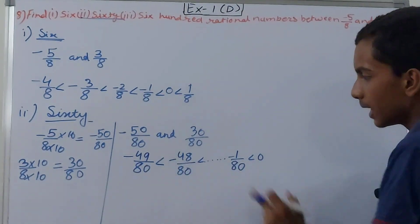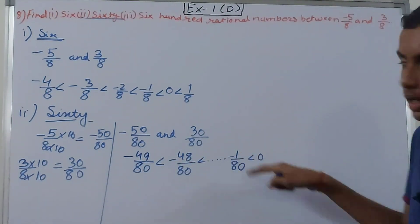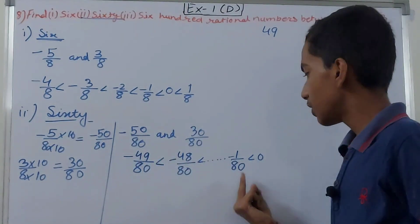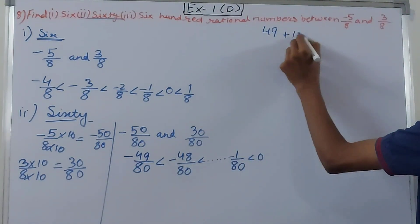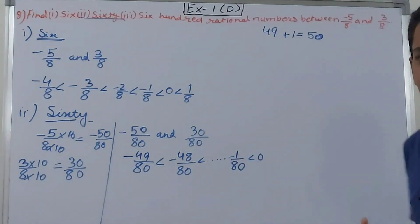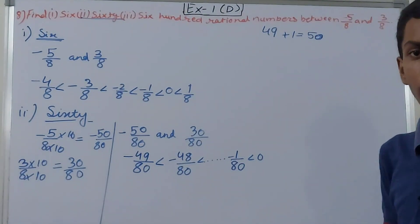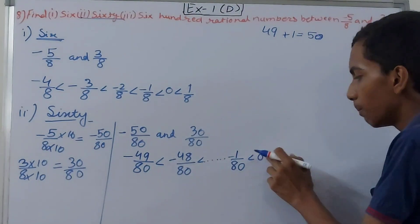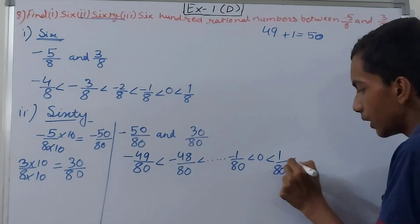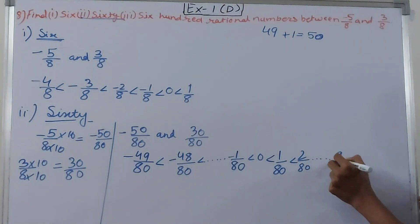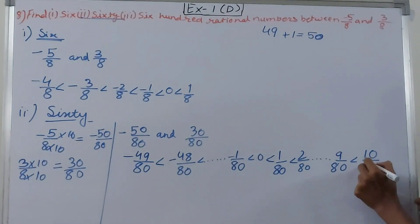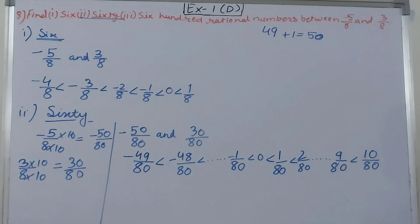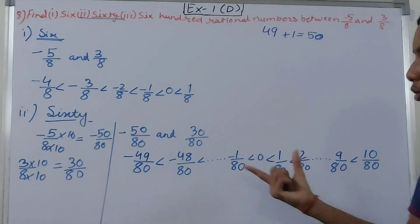From -49/80 to -1/80, how many numbers are there? That is 49 rational numbers from the negatives. Then 0 is one more, so 49 + 1 = 50 already found. We need 60 total, so we need 10 more. Going into the positives: 1/80, 2/80, and so on up to 10/80. That gives us 10 more positive rational numbers. 50 + 10 = 60 rational numbers in total.